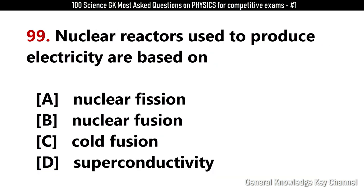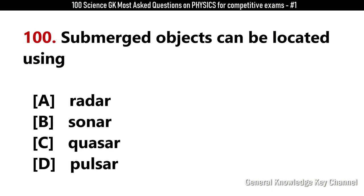Nuclear reactors used to produce electricity are based on? Answer A: Nuclear fission. Submerged objects can be located using? Answer B: Sonar.